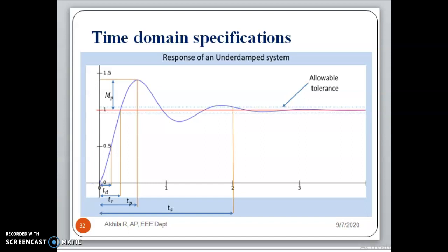This represents the response of an underdamped second order system. As you can see, the response starts from 0, reaches a peak, and then gradually settles down. From 0 to 50% of the final value, we define the time related to delay time.